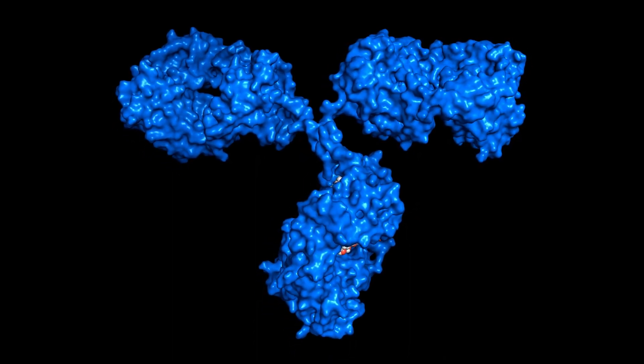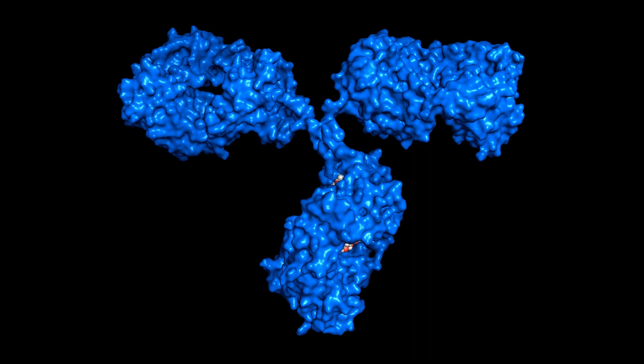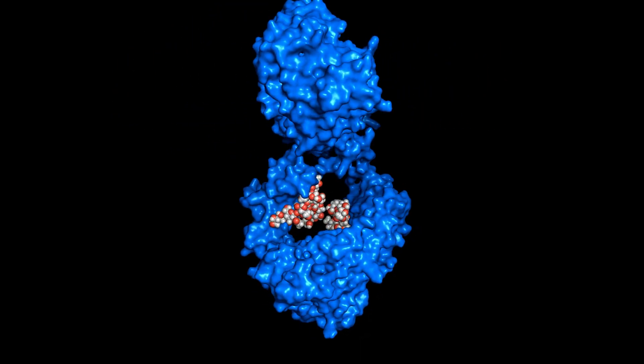This is an immunoglobulin G, or IgG antibody, that we're looking at here. IgG is the main antibody in the blood, and the only one that can cross the placenta, transferring immunity from a mother to a fetus.